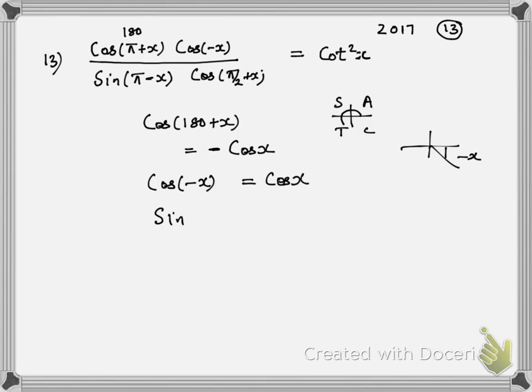Sine of 180 minus x or sine of pi minus x is sin x because 180 minus x is in the second quadrant, and cos of 90, pi by 2 plus x, is minus sin x.